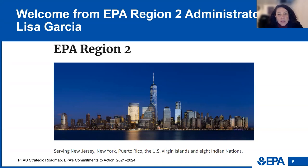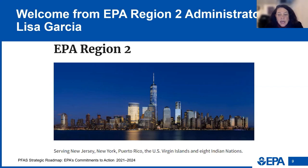Everyone deserves to be protected from these chemicals, regardless of their zip code or the color of their skin. That's the promise of embracing EJ principles. For example, just last month, EPA announced $2 billion to address emerging contaminants like PFAS in drinking water in small and disadvantaged communities across the country. The money is given to states and territories and made available to communities as grants.